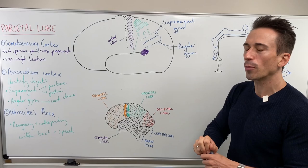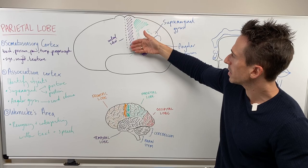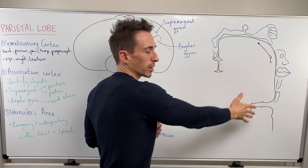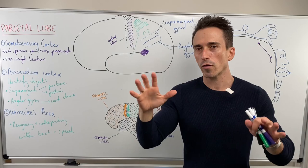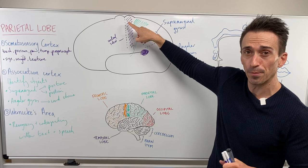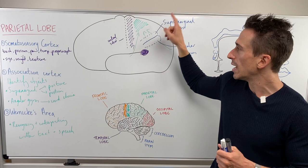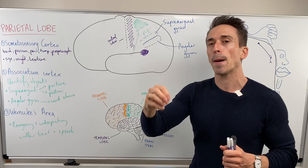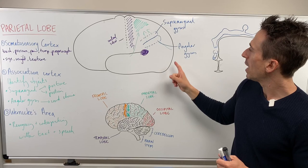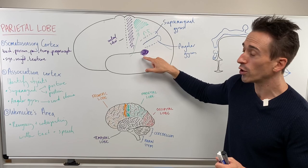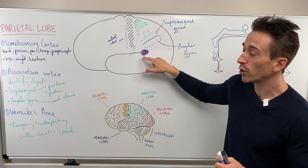To summarize the parietal lobe: it's the sensory cortex. We have the primary somatosensory cortex with a map of the body called the sensory homunculus — important for touch, pressure, pain, and tactile experience, receiving information via the thalamus. For deeper detailed information about what we're experiencing, we bring in the association cortex, including the supramarginal gyrus and angular gyrus. The supramarginal gyrus is about posture and position — not just of yourself but of others — and plays a role in empathy. The angular gyrus, when it comes to language and word choice, has a close relationship with Wernicke's area, which is important for understanding and interpreting written and auditory speech. That is a run through of the parietal lobe.